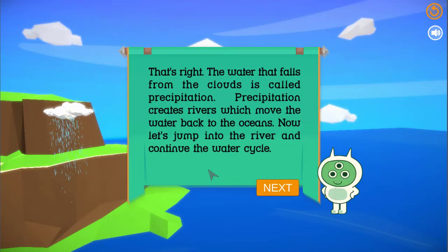That's right. The water that falls from the clouds is called precipitation. Precipitation creates rivers which move the water back to the oceans. Now let's jump into the river and continue the water cycle.